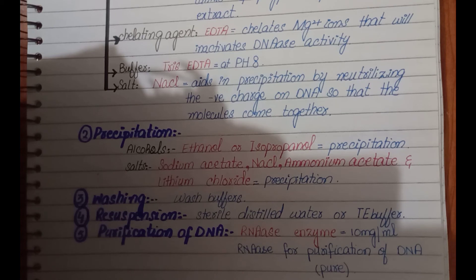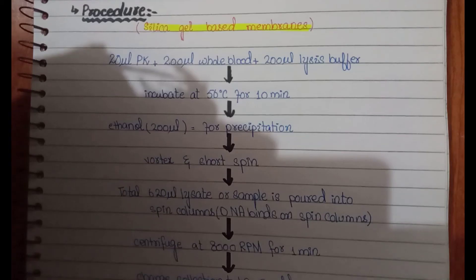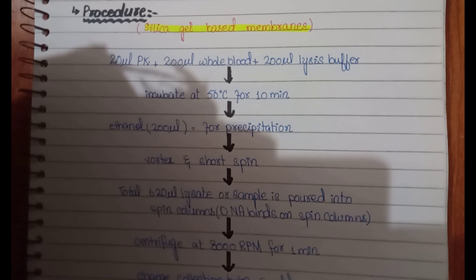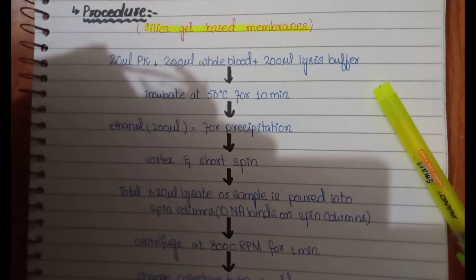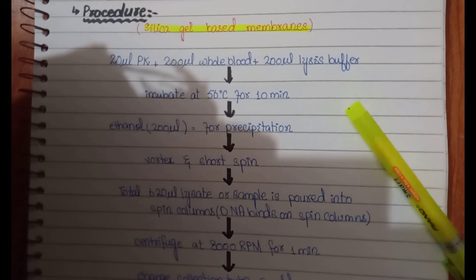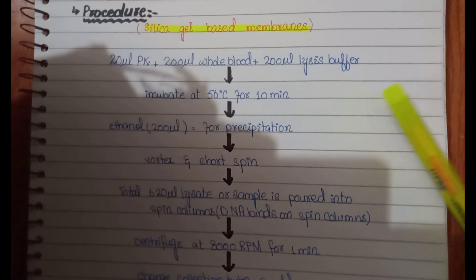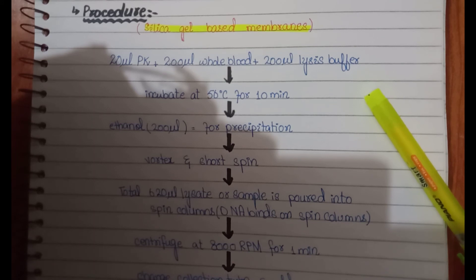Now let's see the procedure for the silica gel-based spin column method. We will take 20 microliters of proteinase K — its function is to degrade proteins. After that, whole blood or EDTA blood is added, then lysis buffer is added. As discussed, the lysis buffer components include CTAB, beta-mercaptoethanol, a buffer at pH 8, and sodium chloride.